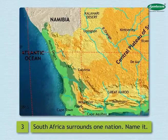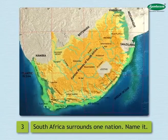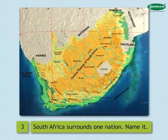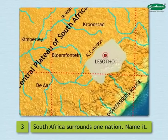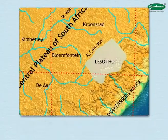3. South Africa surrounds one nation — name it. Do you know the name of that nation? It is Lesotho.